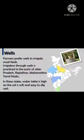Then we have wells. Farmers prefer wells to irrigate small fields. Irrigation through wells is practiced in parts of Uttar Pradesh, Rajasthan, Maharashtra, and Tamil Nadu. In these states, the water table is high, the soil is soft, and it is easy to dig wells.